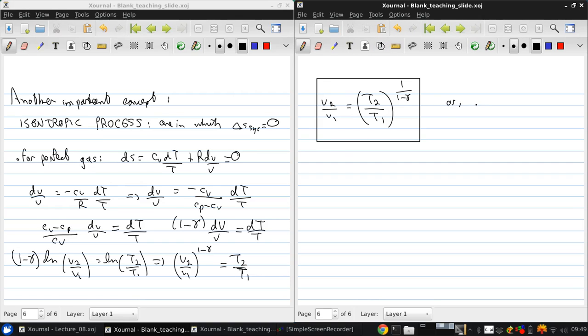Or, since pv equals r t, that means p2 v2 over p1 v1 equals t2 over t1, so that v2 over v1 equals t2 over t1 times p1 over p2. Then we could say that p1 over p2 is t2 over t1 to the 1 over 1 minus gamma minus 1.